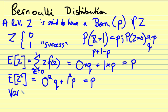So if we want the variance of Z, that's going to be given by the expected value of Z squared minus the expected value of Z all squared, which is going to be p minus p squared.